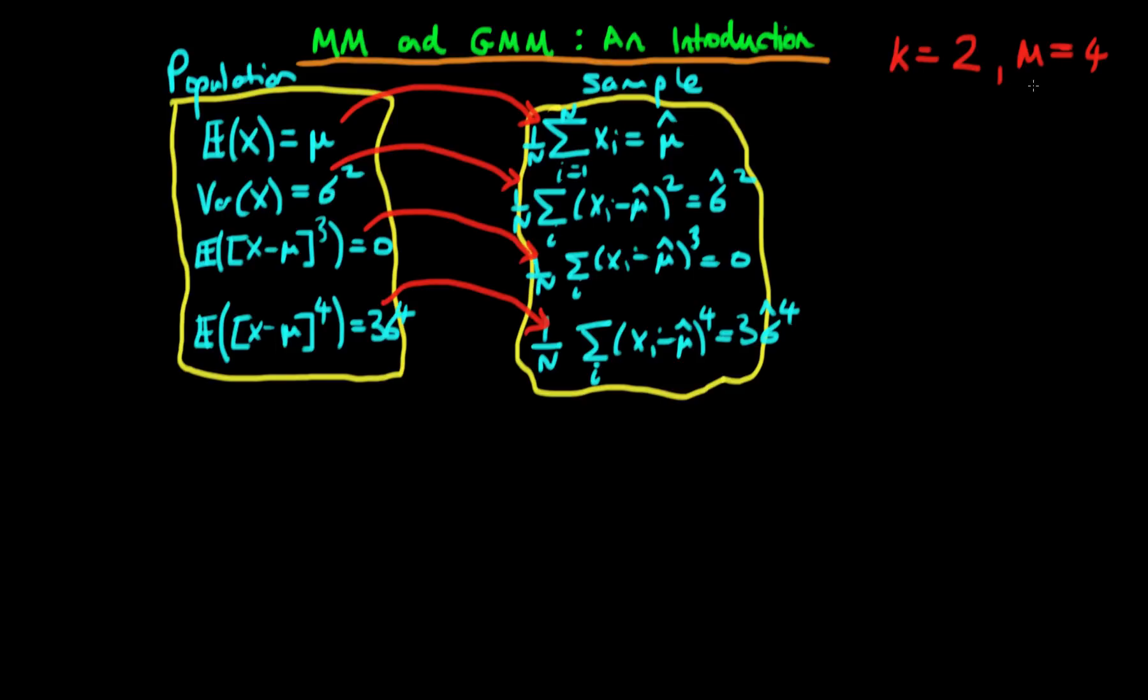So we've got four equations which we need to satisfy but only two degrees of freedom, and hence it's not in general going to be possible to satisfy all of these equations simultaneously.